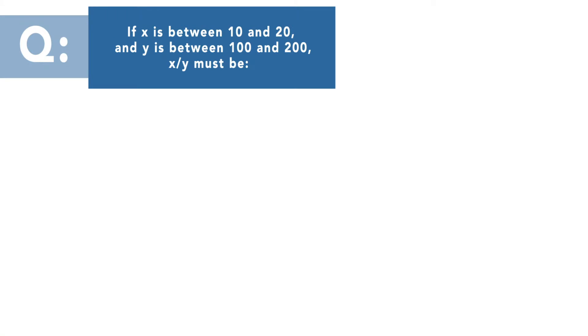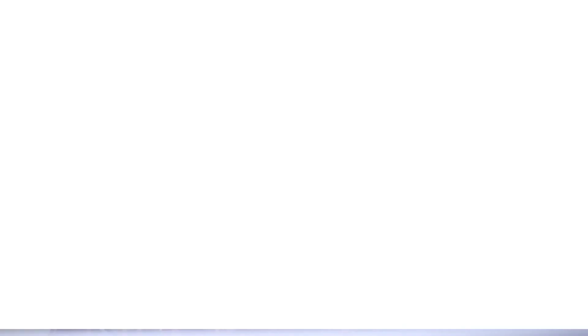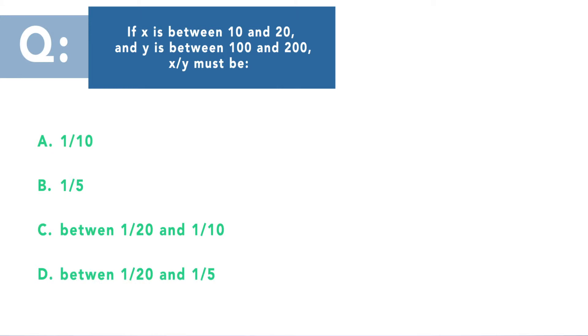Now let's move on to our second question. If x is between 10 and 20 and y is between 100 and 200, then x over y must be — I want you to pause the video for a minute and think about it. It's always a good idea to try to answer a math question before looking at the answer options if you have time. The answer options are: A) 1 over 10; B) 1 over 5; C) between 1/20 and 1/10; or D) between 1/20 and 1/5.